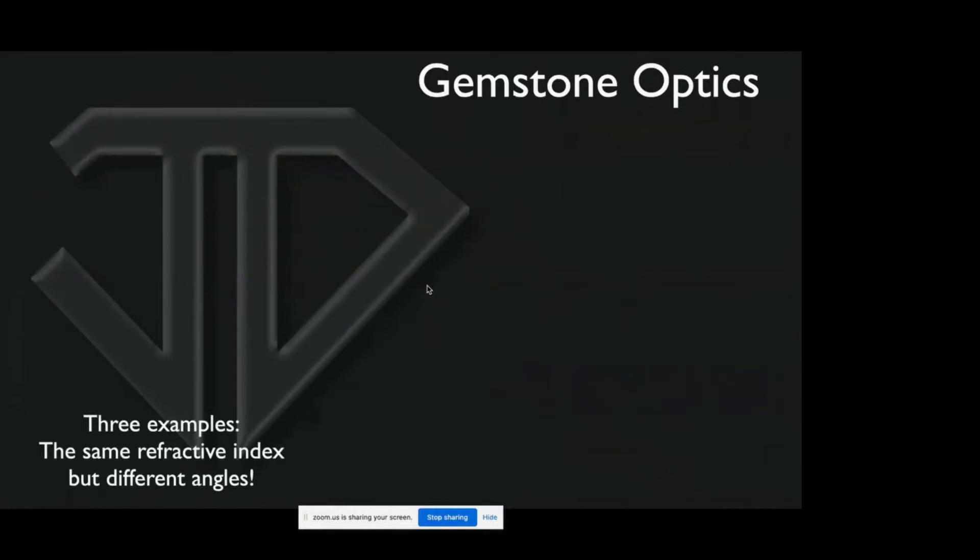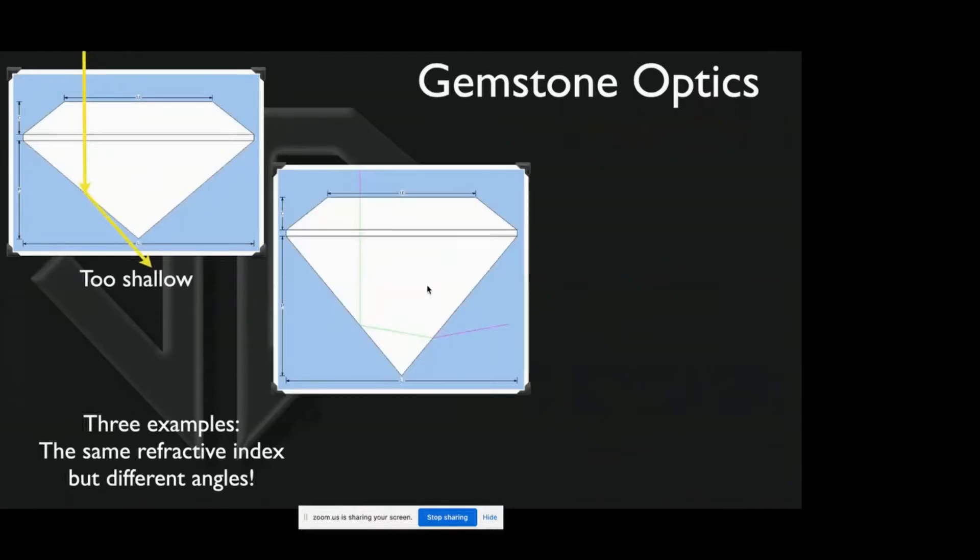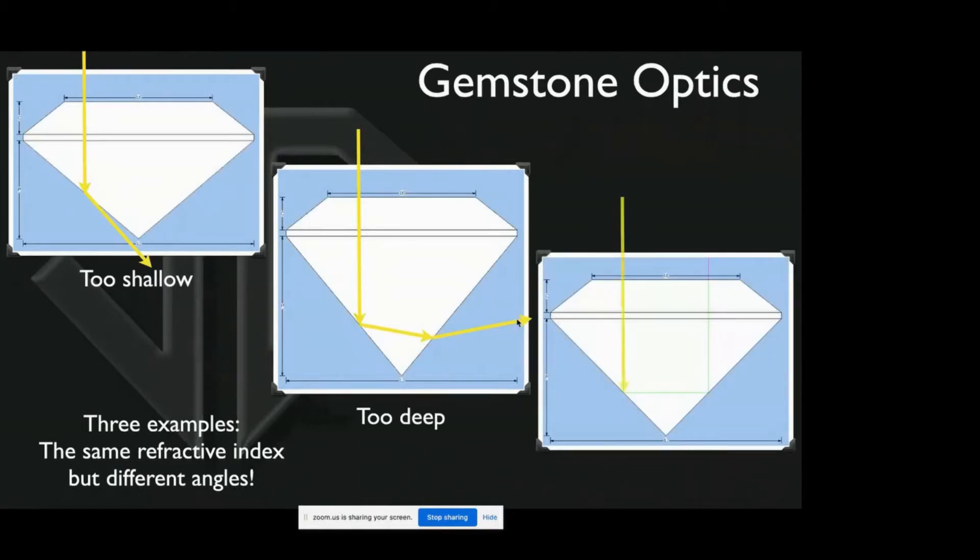Here are some more models—three examples, the same refractive index in this case but different angles. This is a gem that's cut too shallow—this is what happens when you get windowing, the light or line of sight is going out the bottom. This is cut too deep—it goes through and bounces across but leaks out the side. And this is cut just like Goldilocks and the three bears—just right.